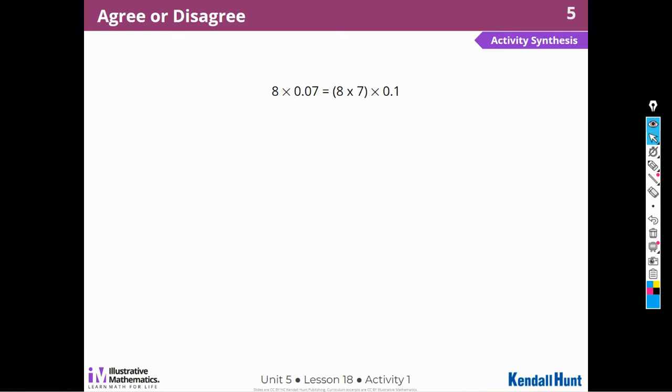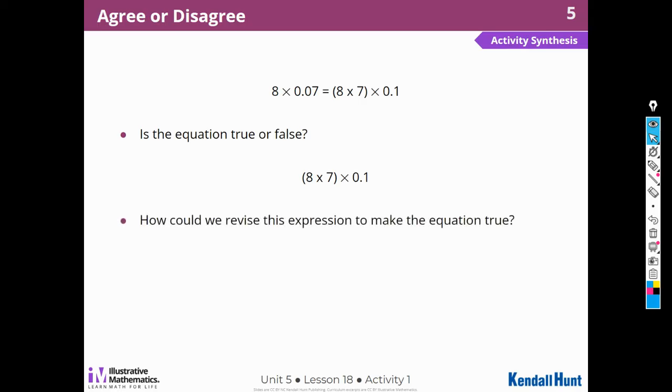So 8 times 7 hundredths is not the same as 8 times 7 times 1 tenth. Remember, this is false. How could we revise this expression to make the equation true? So to make it true, I would have to have this as a tenth, right? This would have to be 7 tenths because we're having the tenths right there. What can I write in the blank to make the expression true? Well, we just wrote the answer, didn't we?